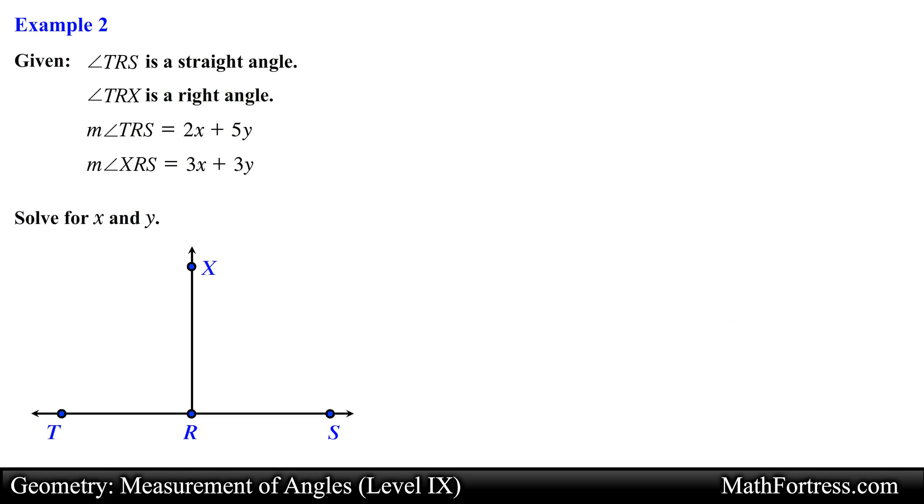Alright, let's move along to the next example. Given that angle TRS is a straight angle, angle TRX is a right angle, the measure of angle TRS is 2x plus 5y and the measure of angle XRS is 3x plus 3y, solve for x and y.